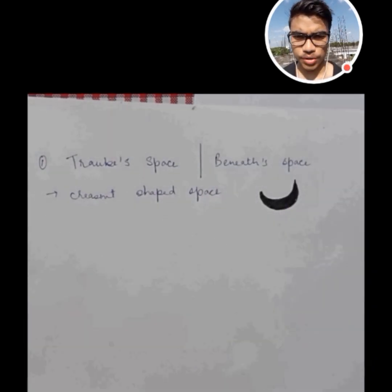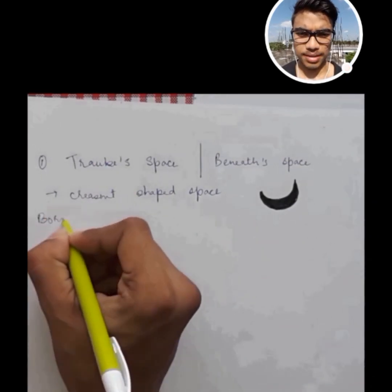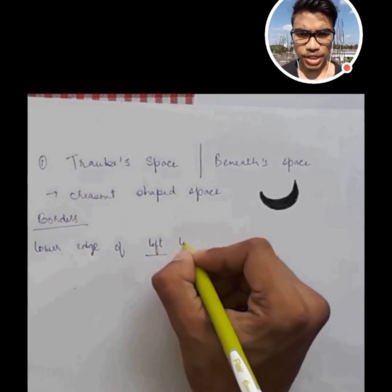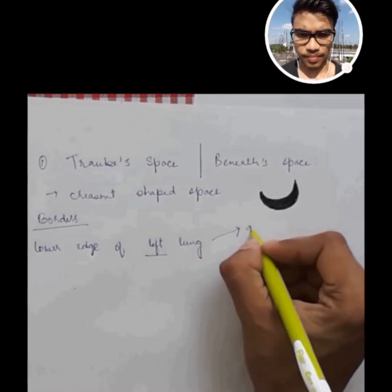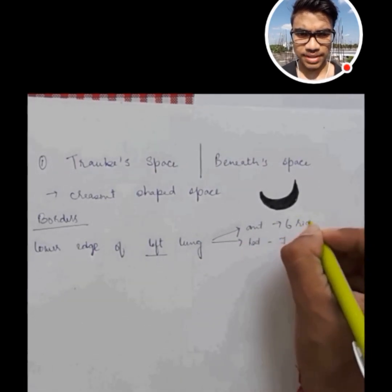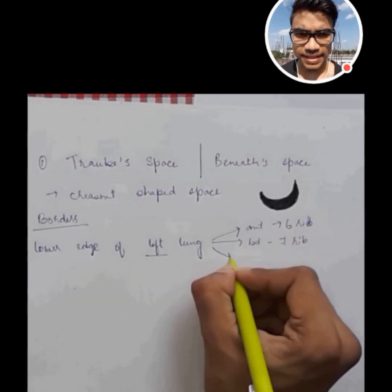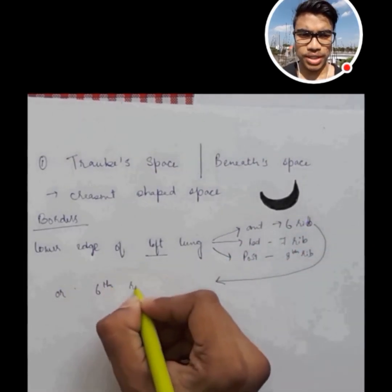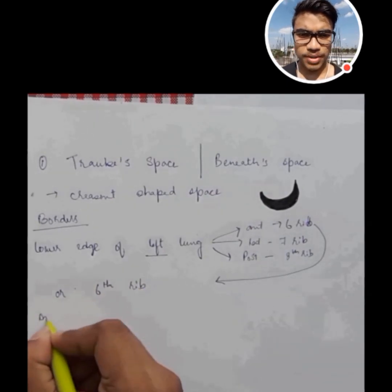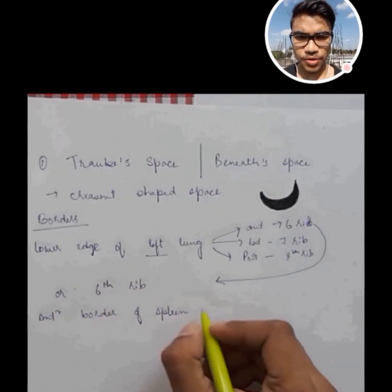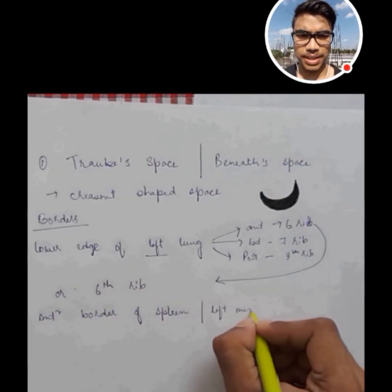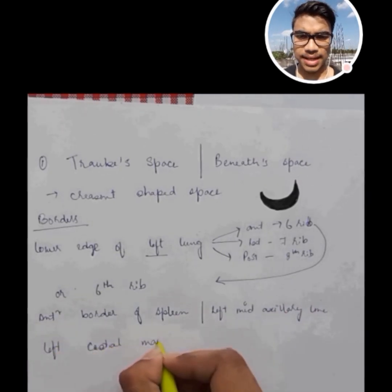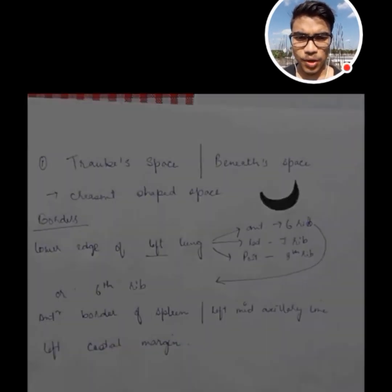Now let's look at the borders of the drop space. The first border is the lower edge of the left lung. The lung has sixth, seventh, and eighth ribs in the anterior, lateral, and posterior border. So the sixth rib is the lower border. The anterior border of the spleen are the left mid-axillary line and left costal margin.